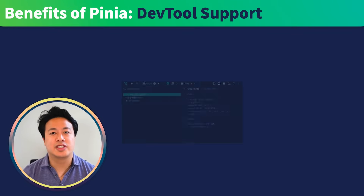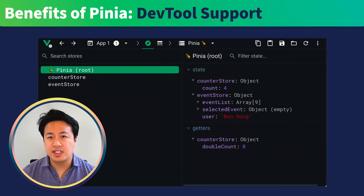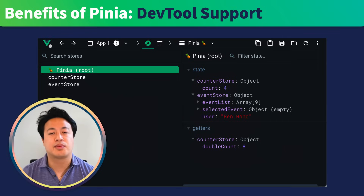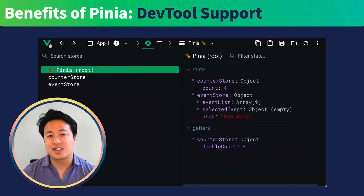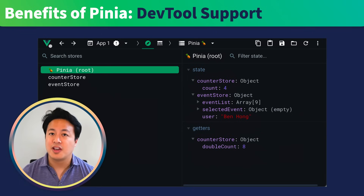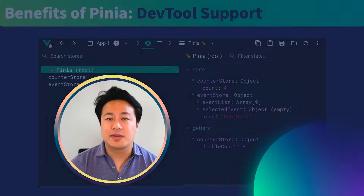With the introduction of the Composition API into the ecosystem, one of the things it opens up is a brand new way for developers to share state between components. As a result, it's pretty easy to build your own. But one of the benefits of using a standard library like VueX is that it brought a convention, and not only that, a set of dev tools to make it easier to debug and build with the library. And just like VueX, Pinia also comes with its own set of dev tools, so you don't have to worry about losing that when you migrate over to Pinia.